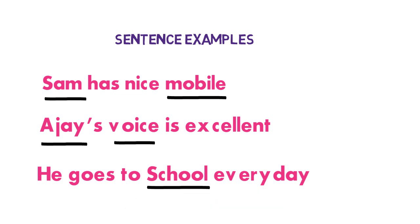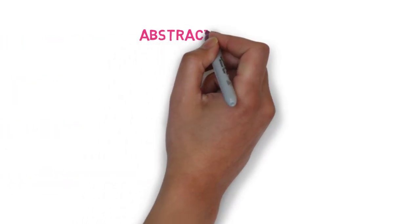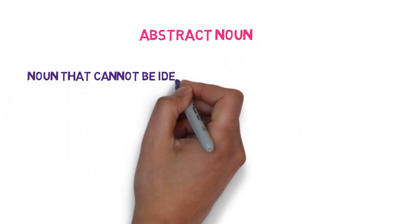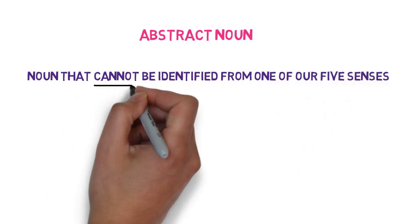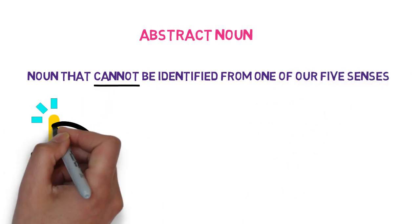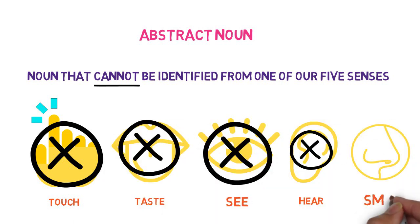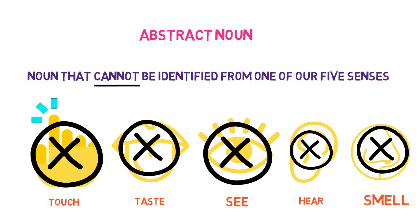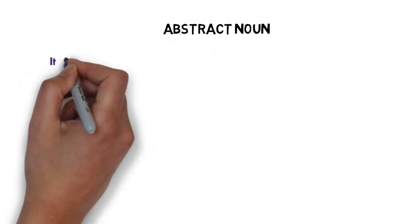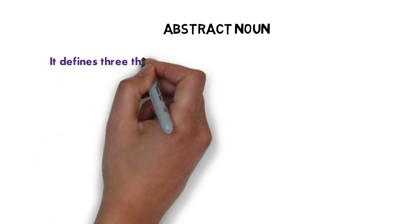I hope you are clear with concrete nouns. Now let's look into another category of noun, that is abstract noun. What are abstract nouns? Nouns that cannot be identified from any of our five senses — which are touch, taste, sight, hearing, and smell. You cannot identify an abstract noun with these senses. Basically, these nouns define three things: idea, quality, and state of mind.